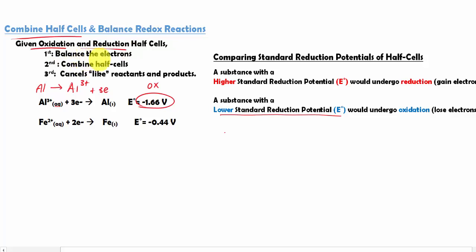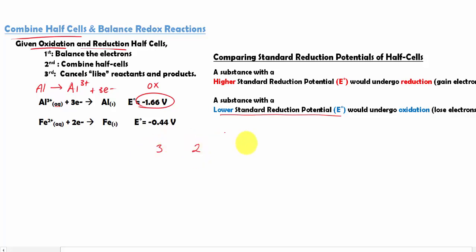Before we combine, we have to balance the electrons. Notice how the oxidation process gives off 3 electrons, where the reduction process gains 2 electrons. Since 3 and 2 are not equal, they don't cancel out, so we have to find the common multiple. For 3: 3×1=3, 3×2=6. For 2: 2×1=2, 2×2=4, 2×3=6. So they have a common multiple of 6.